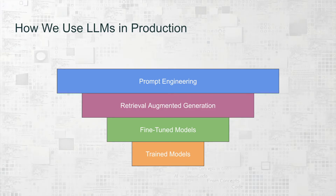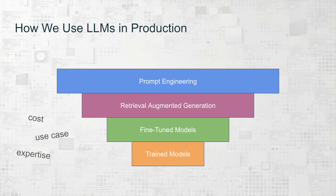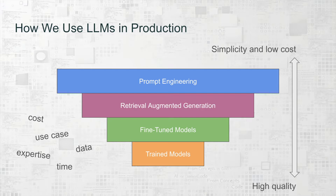There are a few key ways to use LLMs in production today: prompt engineering, retrieval augmented generation, fine-tuned models, and trained models. The choice of method depends on several factors, such as cost, time, expertise within the organization, available data, and the specific use cases that need to be addressed. A trained model delivers the best results, but it's important to consider all the factors. Let's walk through each method, starting with the simplest, and break down the advantages and disadvantages of each approach.